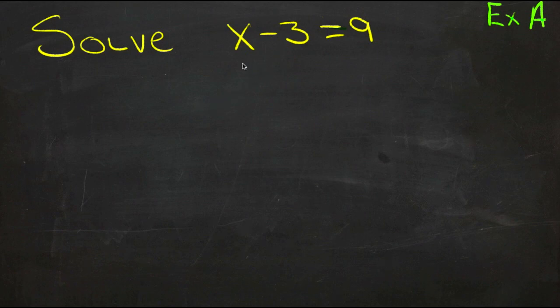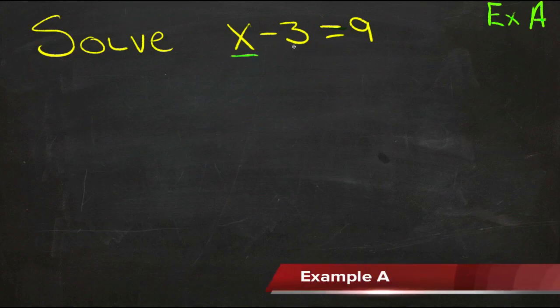When we're solving equations for a given variable, the goal is to get the variable by itself on one side of the equal sign, and to get everything else, all the other numbers, on the other side of the equal sign, and simplify it as much as possible.